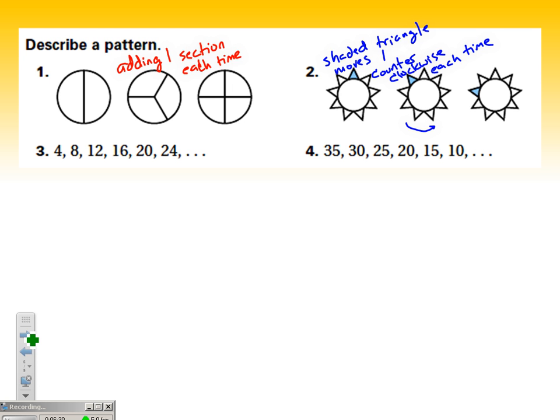For number three, you could say that they're adding four each time. It's kind of tempting to think that they're multiplying by two when they go from four to eight, but then that pattern doesn't hold as we go through the list. You kind of have to use some logic to find the pattern. And then for number four here, they're subtracting five each time. Again, notice that 'each time' language. That's an important concept as we're describing patterns.